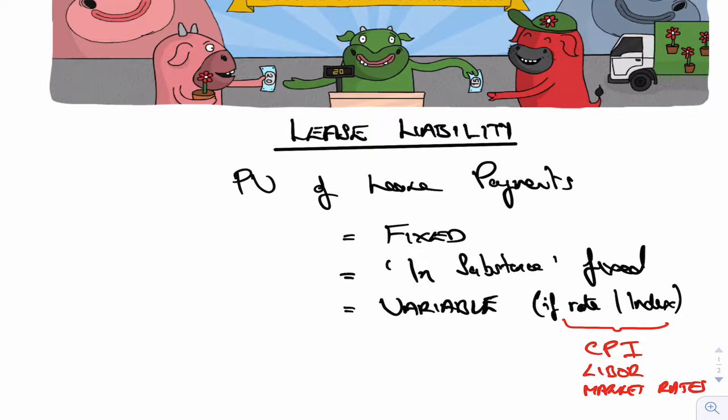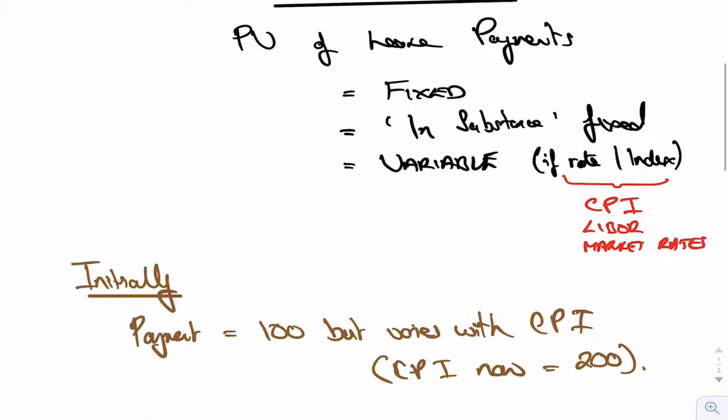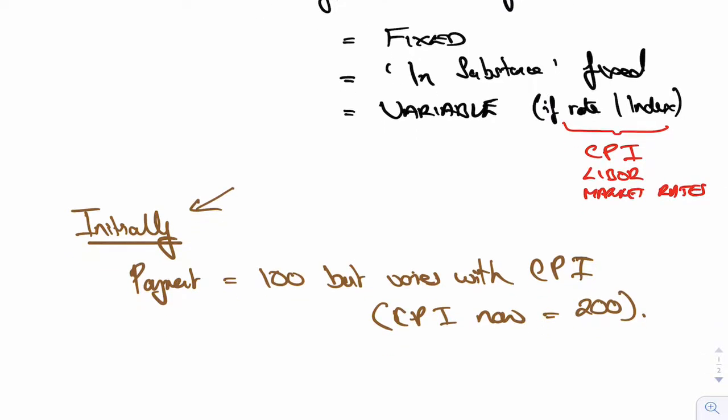Think about this example. Initially we make a payment of 100 that varies with the consumer price index, 100 per annum, and it's a five-year lease. The CPI now stands at 200.